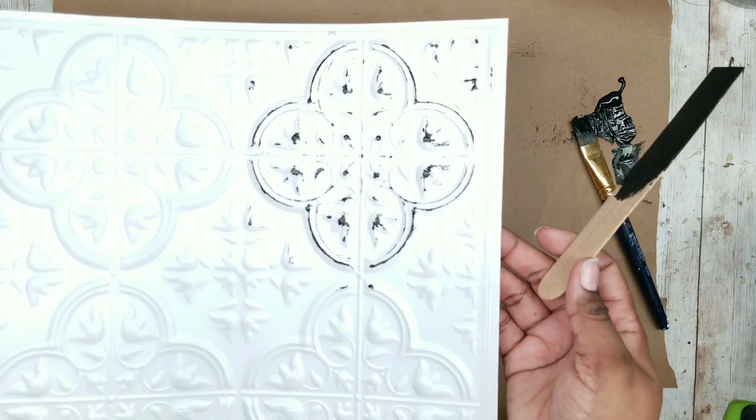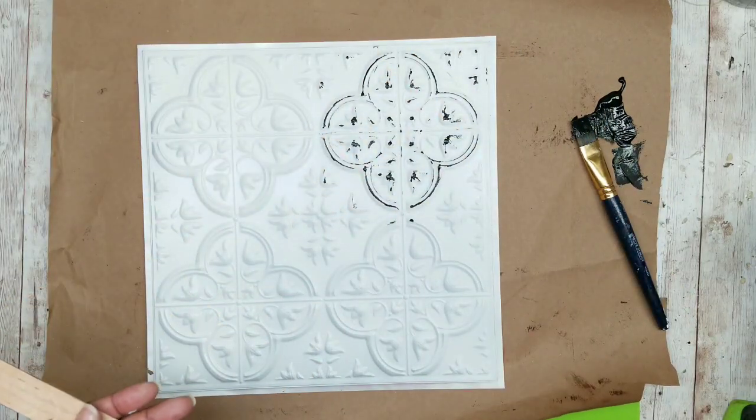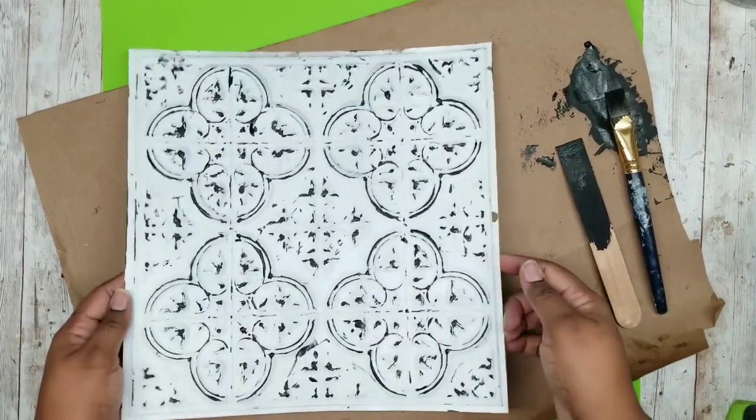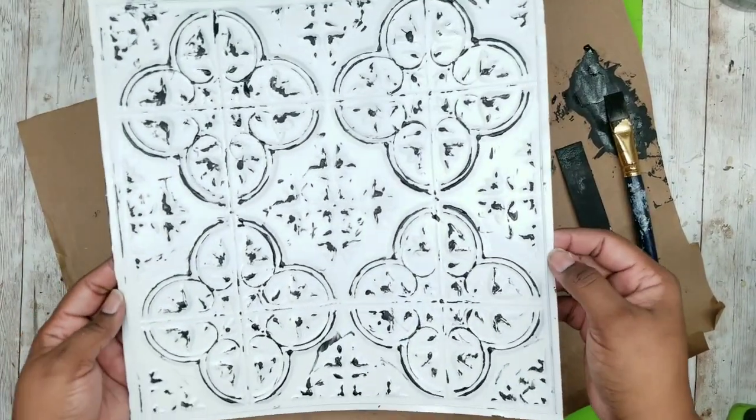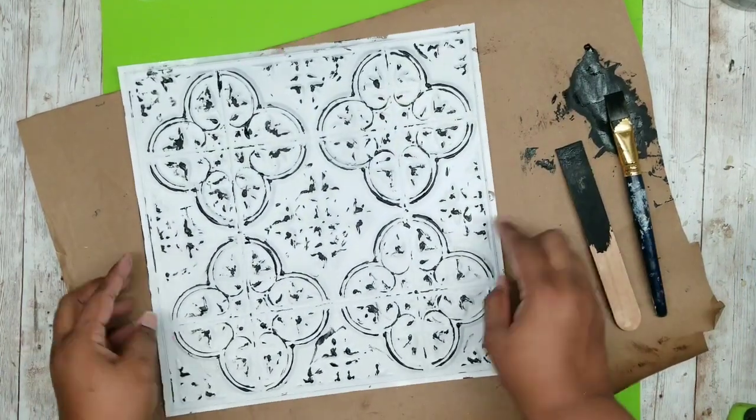Here is one of the corners done and you just want to repeat this all the way around the tile. Here is all of the tile all nice and highlighted with our paint and you want to allow this to completely dry.